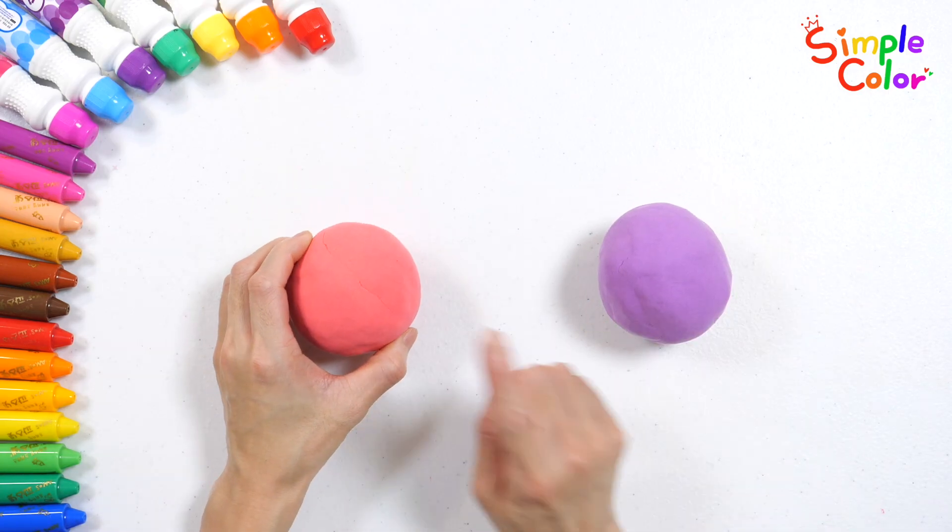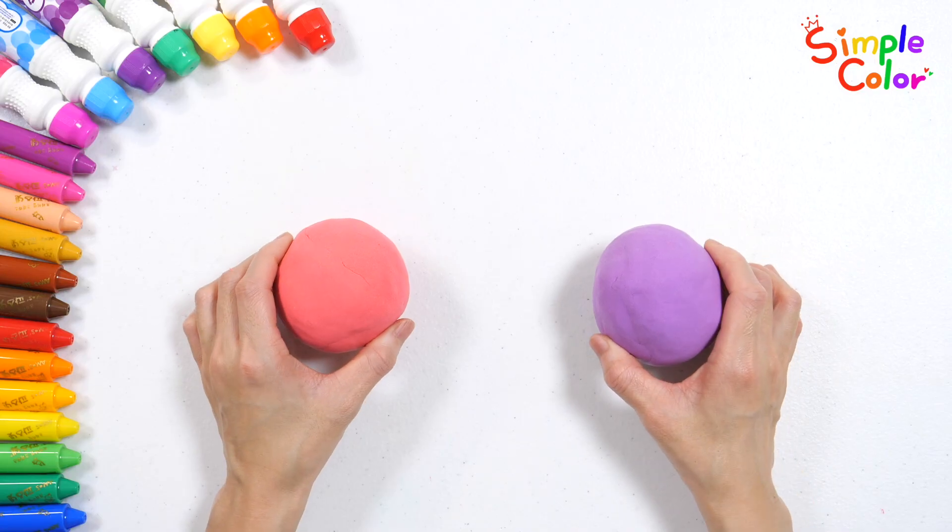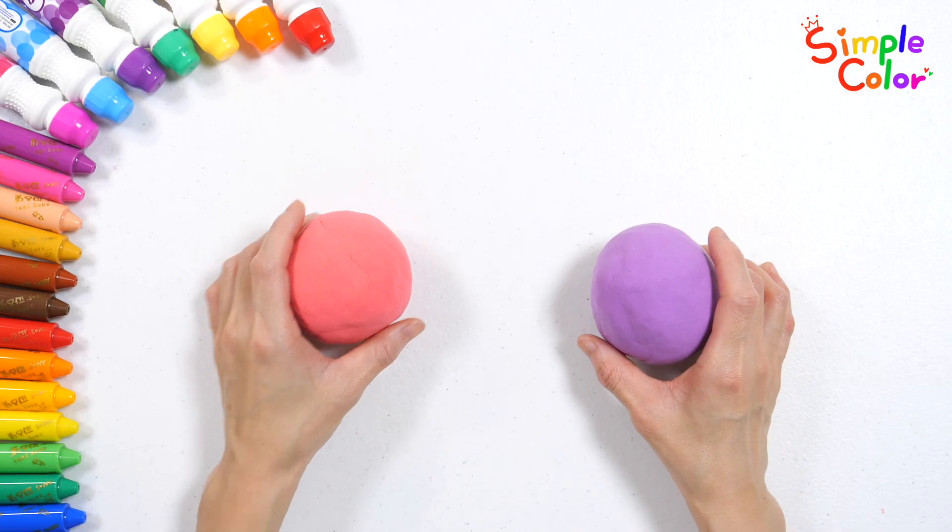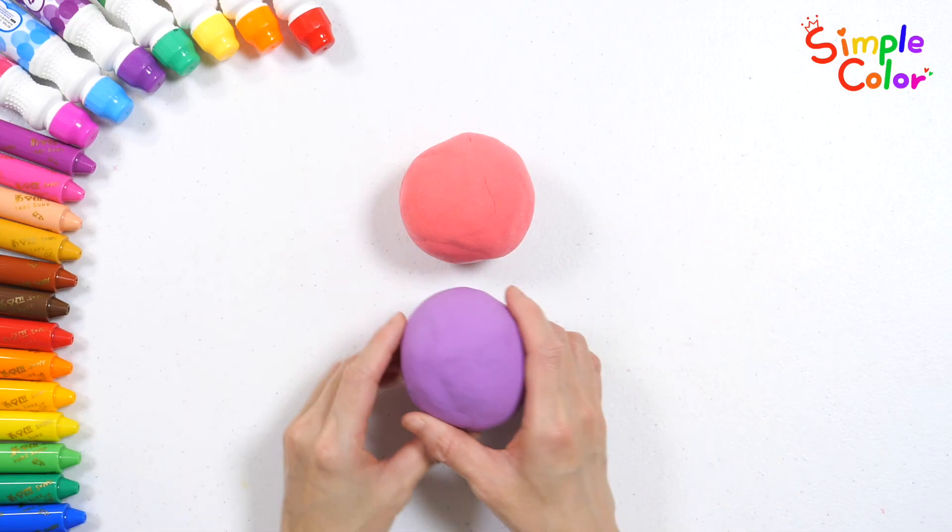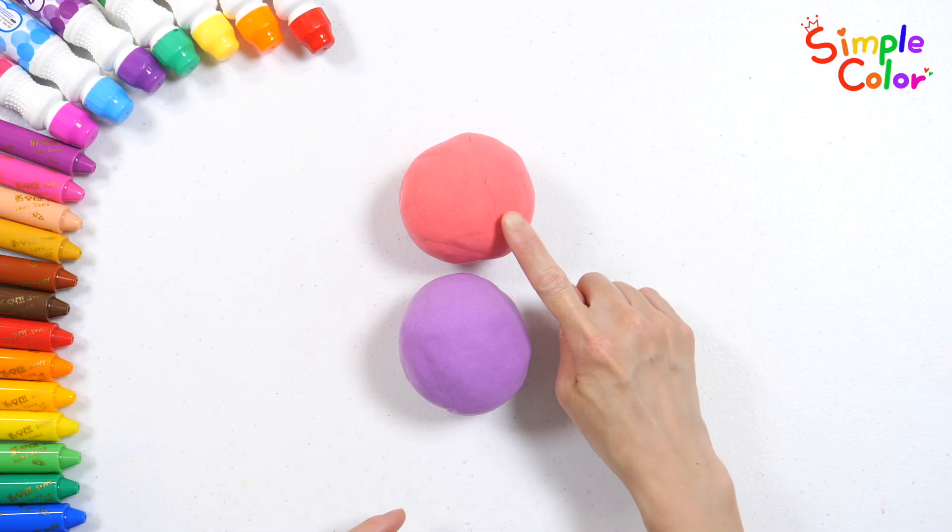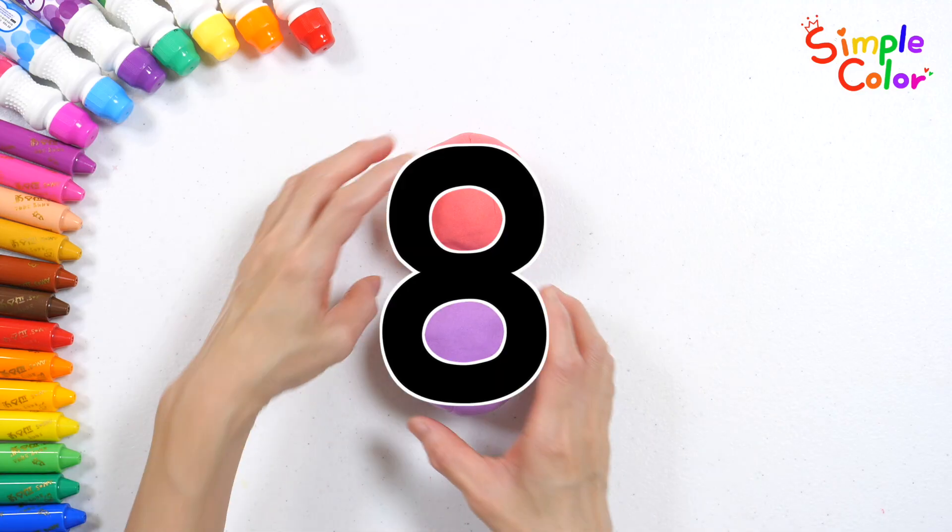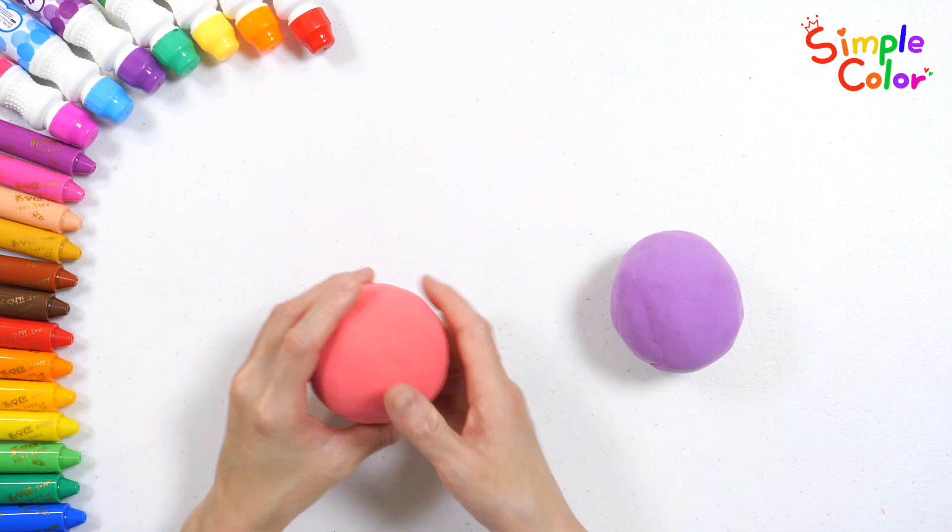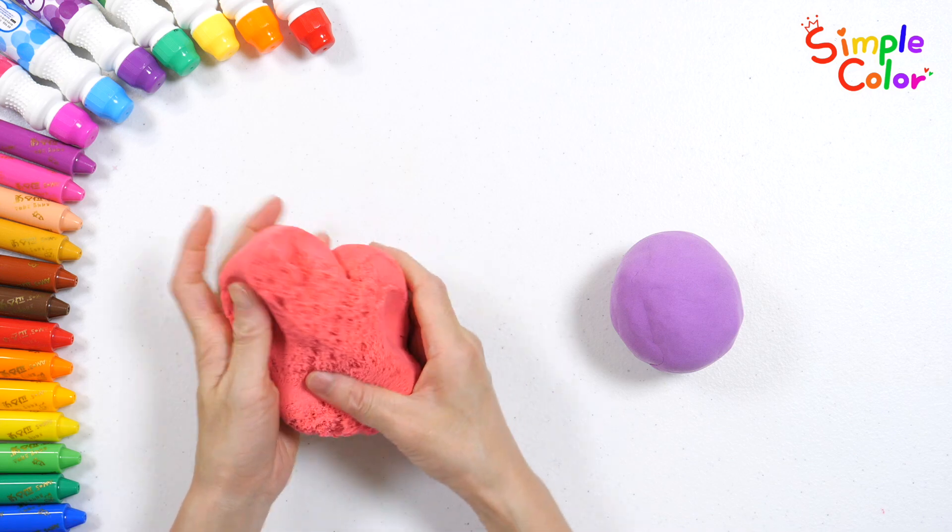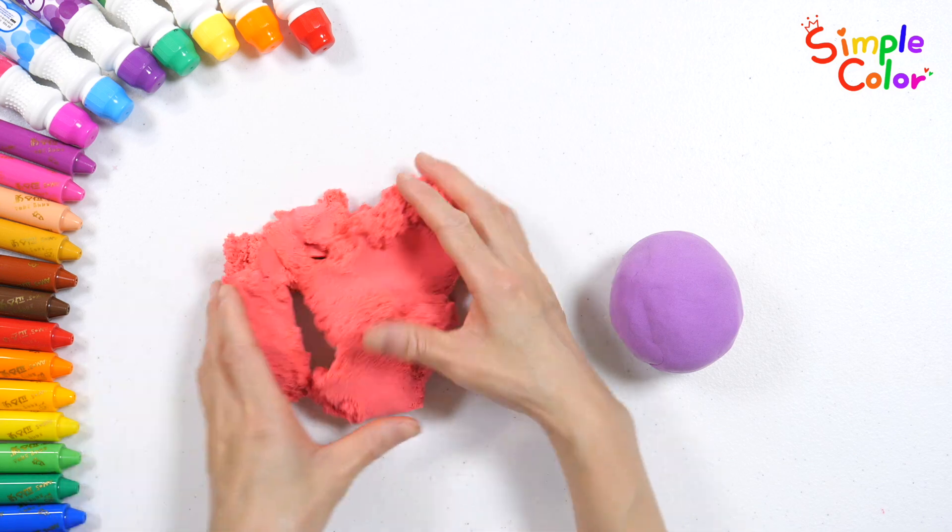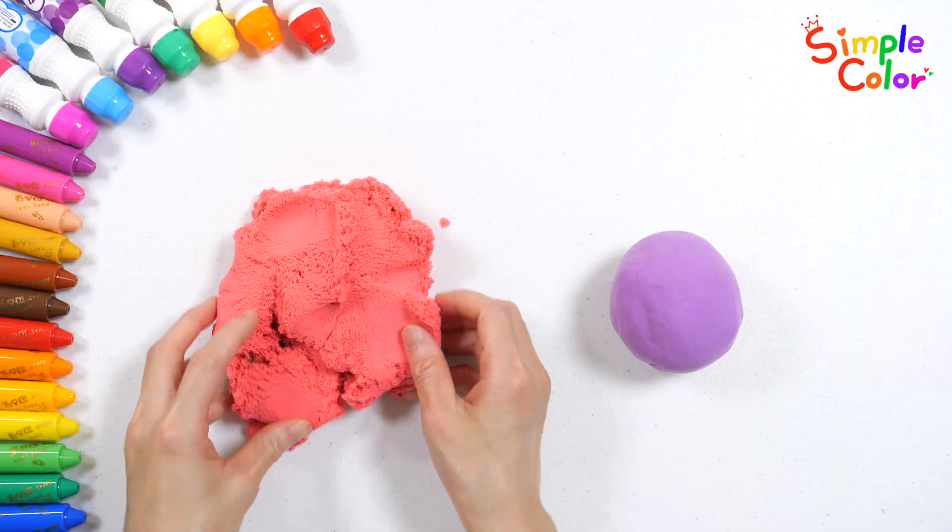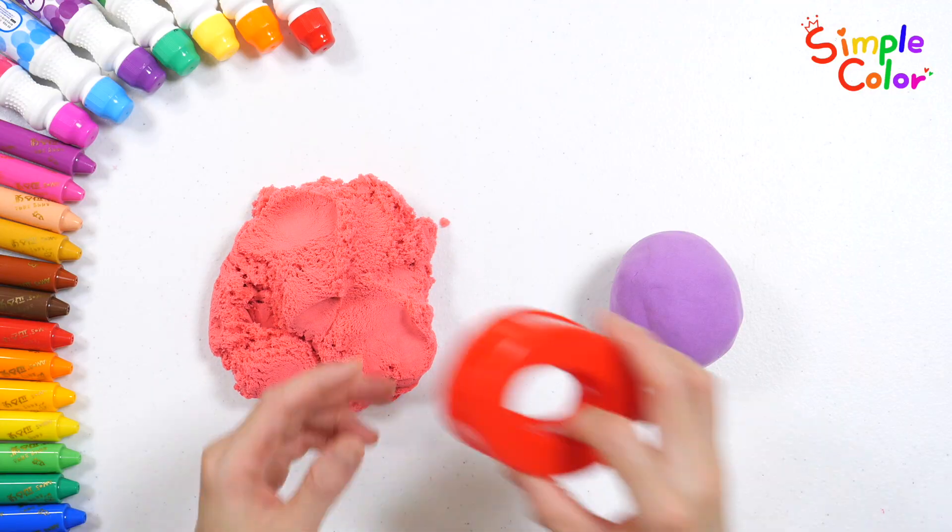We have red and purple clay. We joined two round pieces of clay and it looks like the number eight. Let's use a round mold to make the number eight shape. Press the round mold into the red clay.